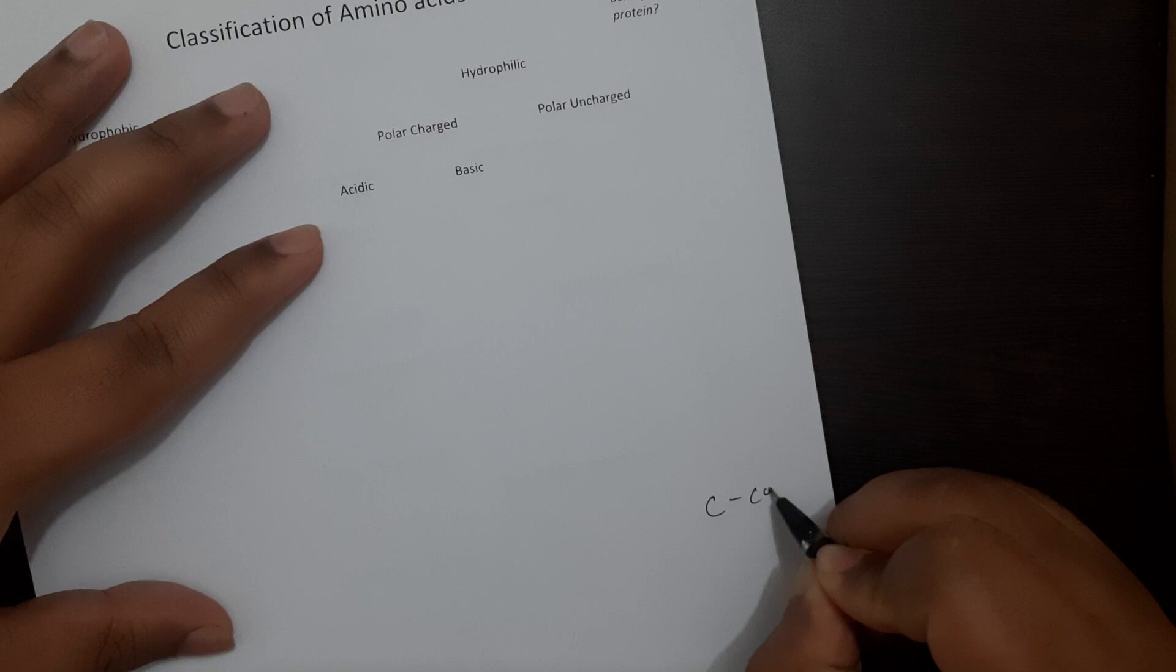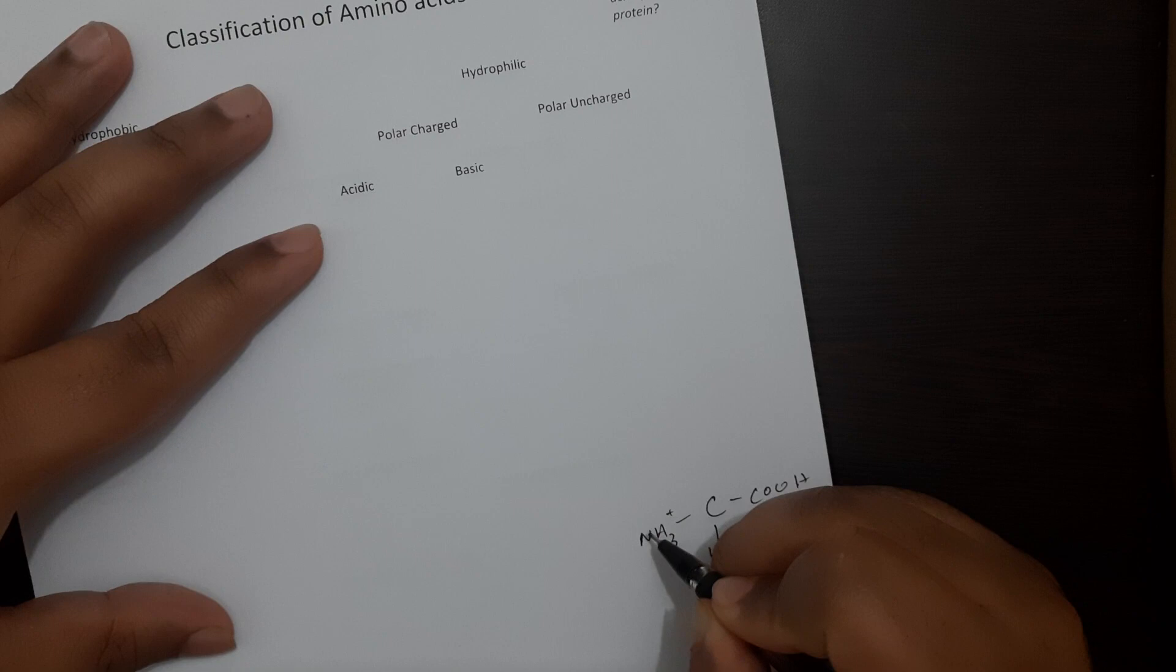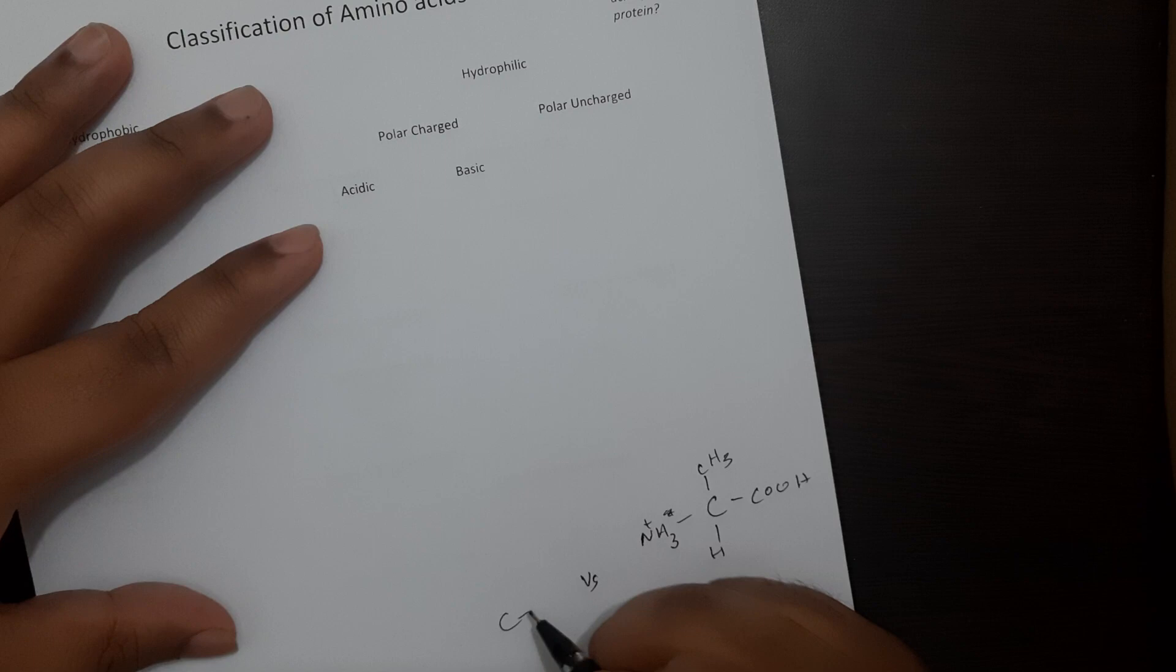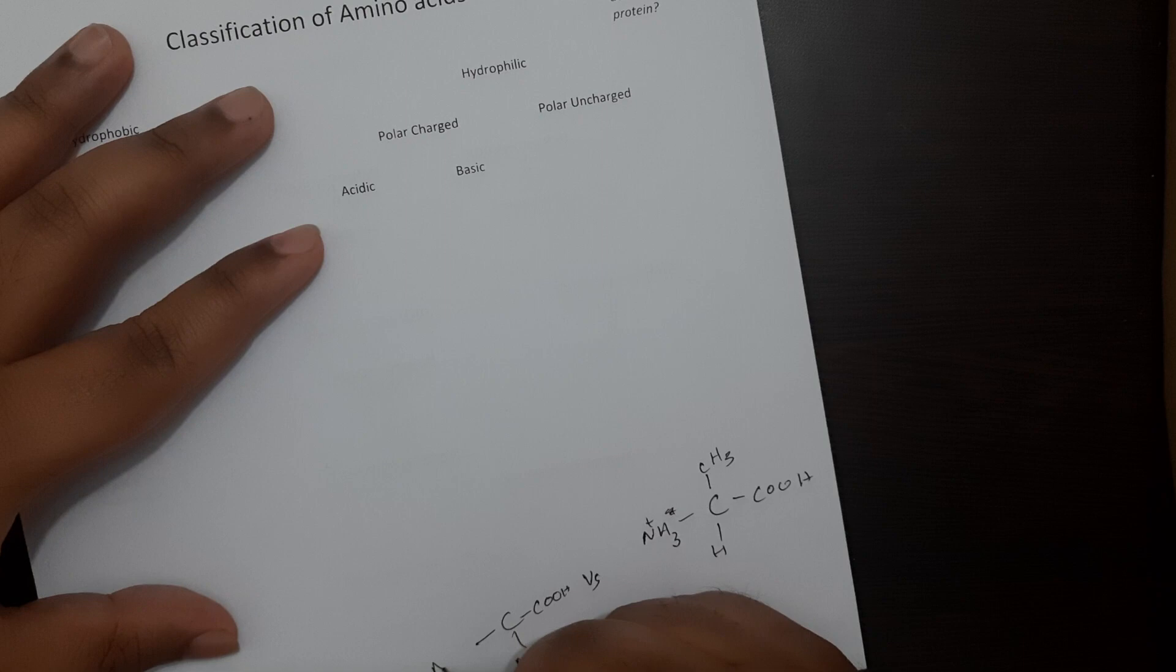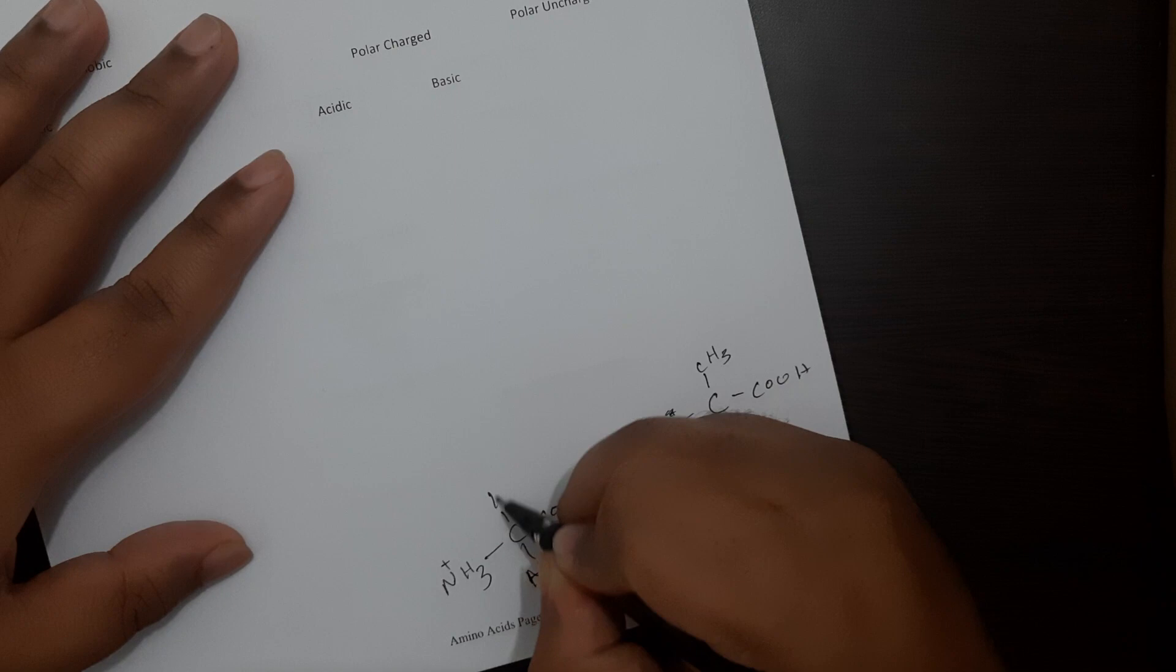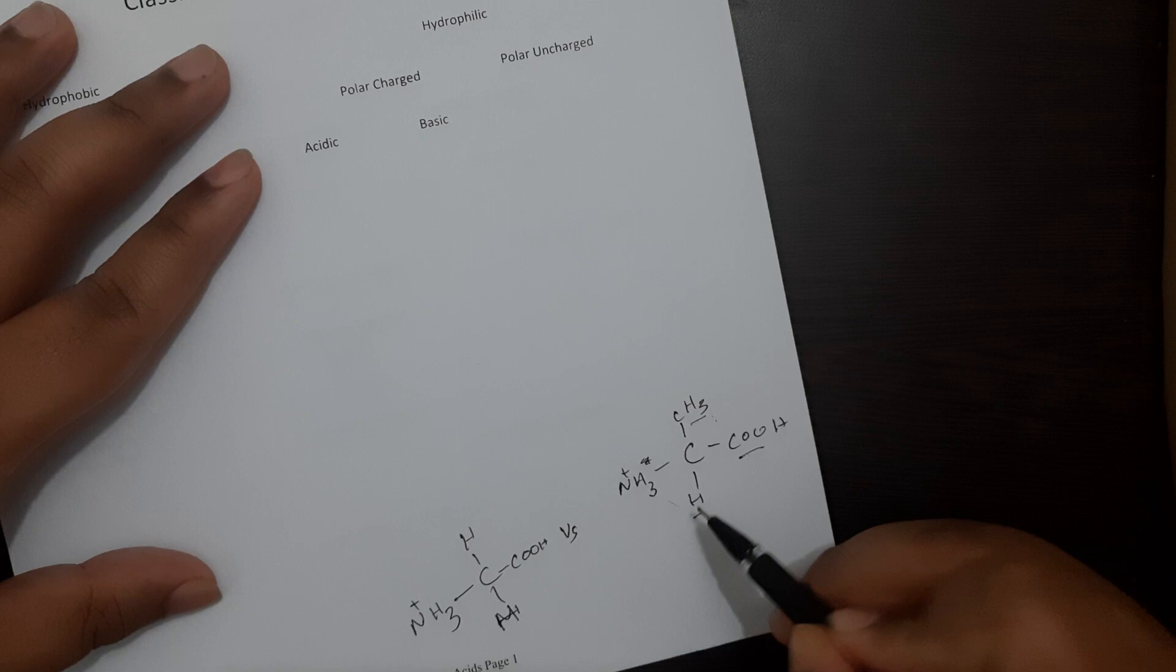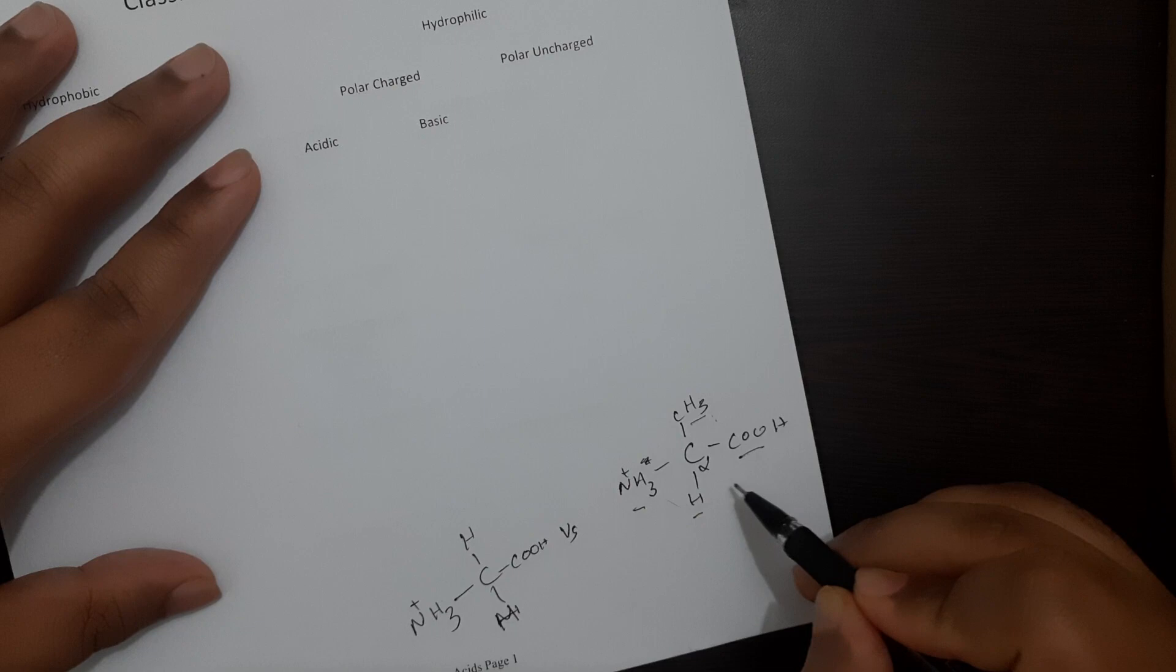If I look at an amino acid such as alanine NH3+ and CH3 versus another amino acid that is glycine, we can notice that this is a chiral molecule. Why? Because there are four distinct or different groups attached to your alpha carbon.